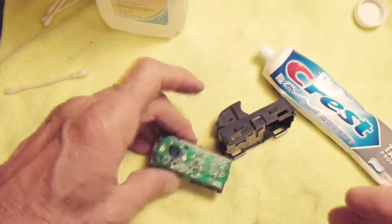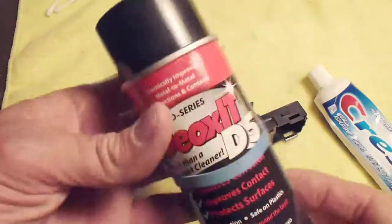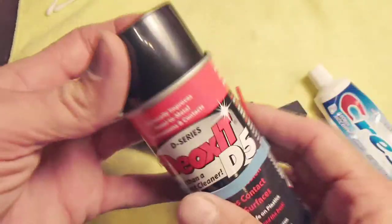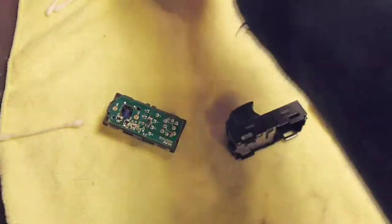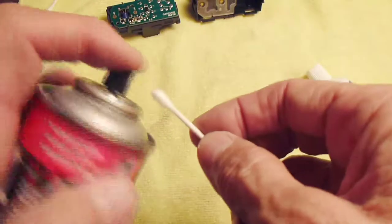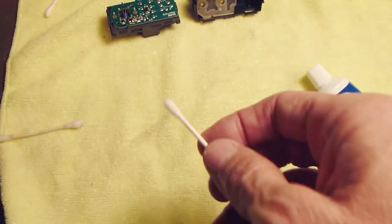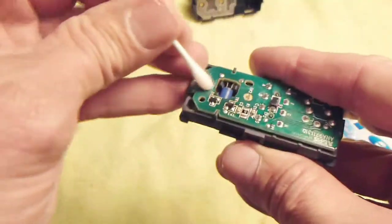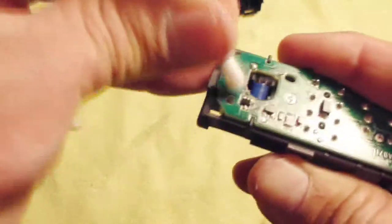Once those are cleaned off. Again, you really don't have to do this. But because I have this stuff on hand, I'm going to use it. What it does is it helps to prevent those contacts from oxidizing again. So, you know, the job might just last a little bit longer by spraying some of this on a Q-tip. And just scrubbing the contacts with it.